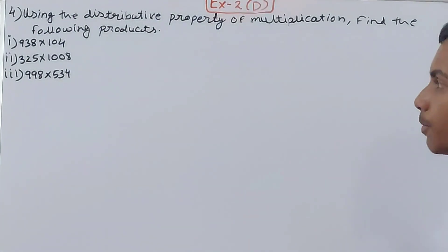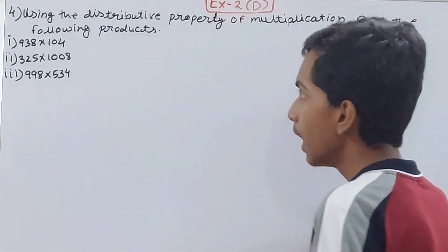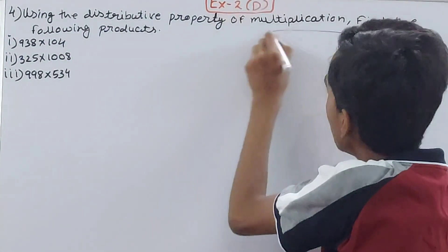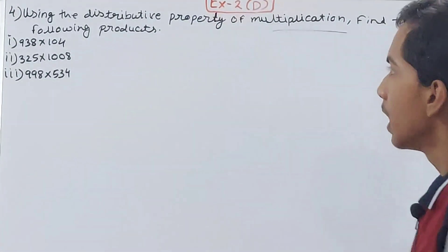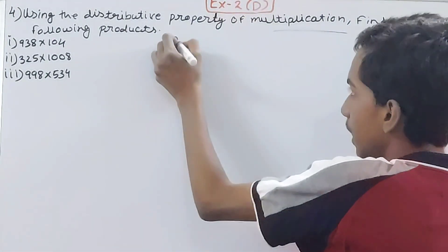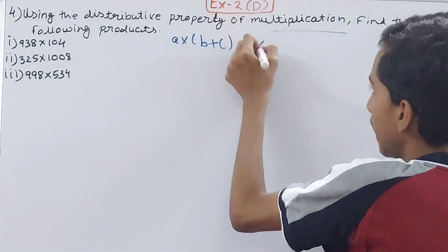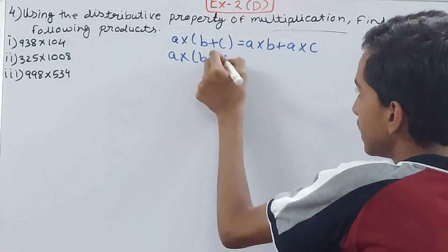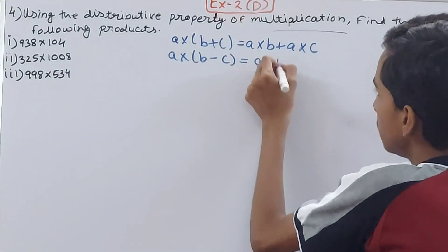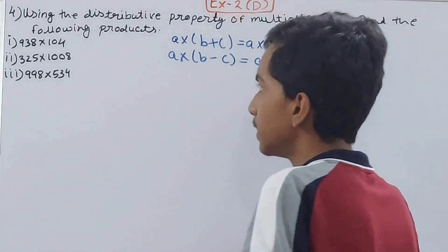We have to use the distributive property of multiplication to find the products. It's quite simple. We can use both properties, one over addition and the other over subtraction. We have two types: a(b+c) = ab + ac and a(b-c) = ab - ac, and we'll be using these.